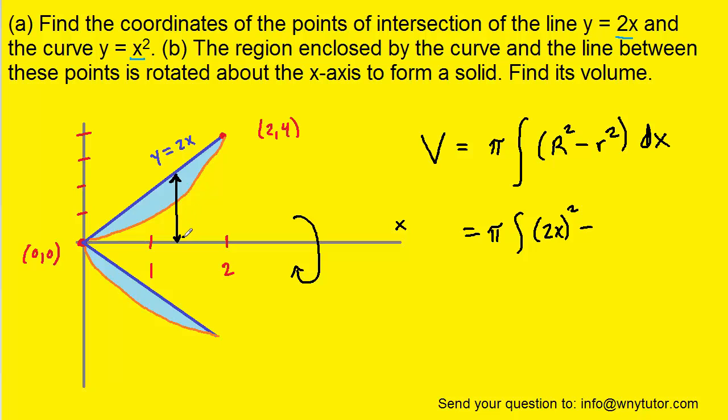For the smaller radius, we draw a line from our axis of rotation up to the nearer curve, which is the parabola y equals x squared. So for the small radius, we're going to have x squared. Don't forget to square it and then dx. For the limits of integration, we're going to use the x-coordinates of those points of intersection, from 0 to 2.